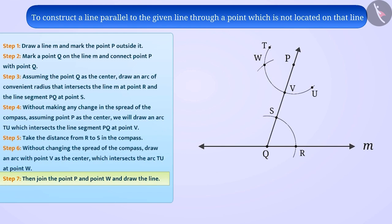Step 7: Now, join P and W to draw a line L. Here we observe that angle PQR and angle QPW are alternate interior angles and they are equal. As you know, if two parallel lines are cut by a transversal, each pair of alternate interior angles are equal.